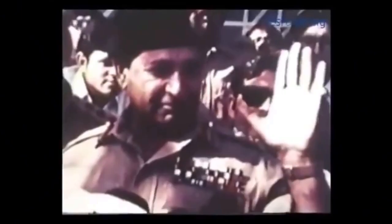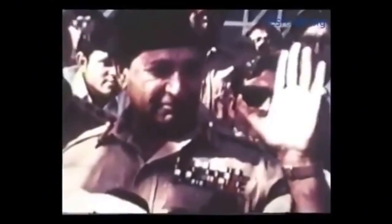From their surrender, Pakistan lost a significant portion of their military as well as East Pakistan, which included most of Pakistan's population and economy. The only punishment for the Pakistani military junta, who planned and oversaw the genocide, was political. For example, President General Yahya Khan resigned and was replaced by Zulfiqar Ali Bhutto.